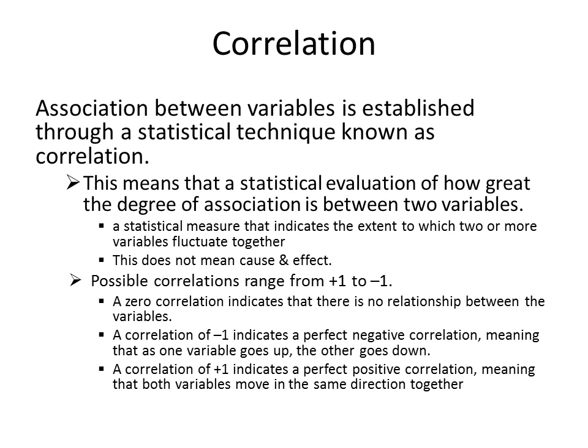One of the most important concepts to know is correlation. This is the association between variables established through a statistical technique. It means a statistical evaluation of how great the degree of association is between two variables and how they fluctuate — do they move together or apart at the same rate? A statistical measure indicates the extent to which two or more variables fluctuate together. This does not mean cause and effect; it's very difficult to ascertain cause and effect, so in most studies we look at the level of correlation.